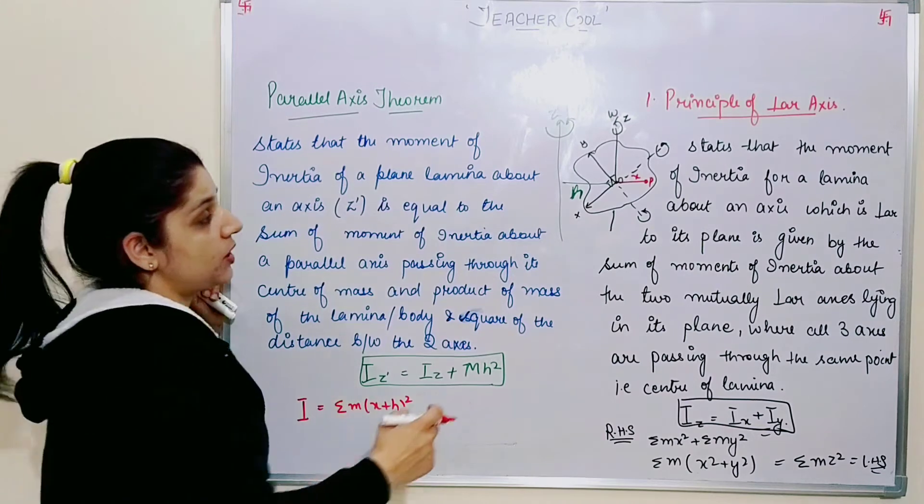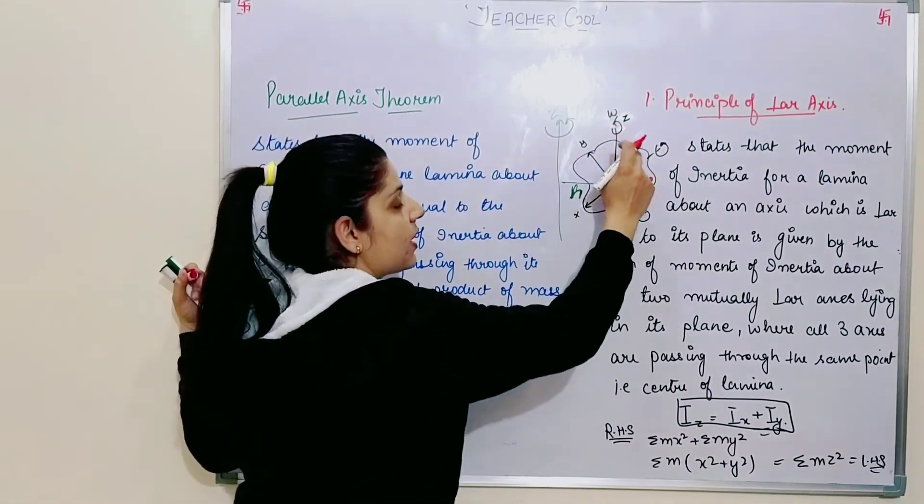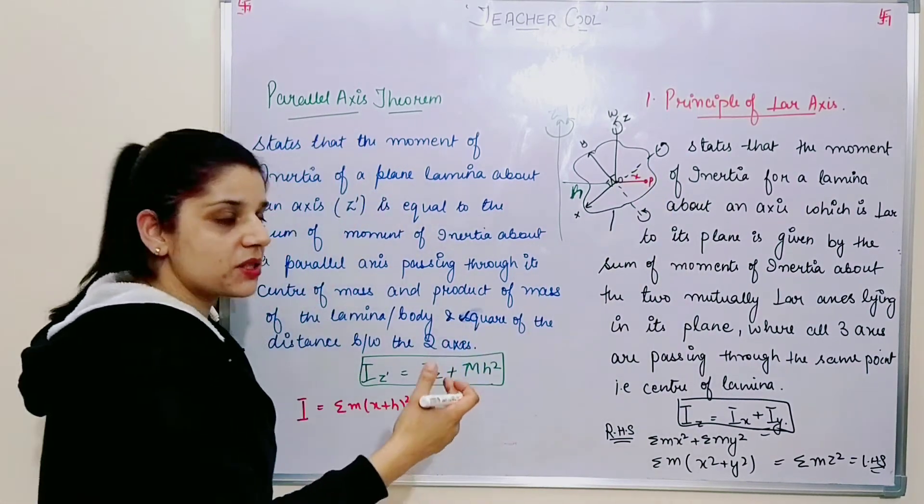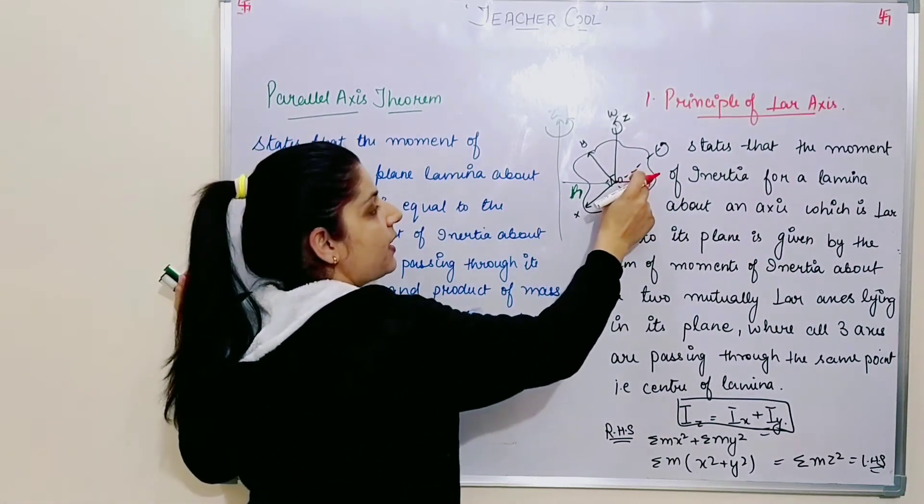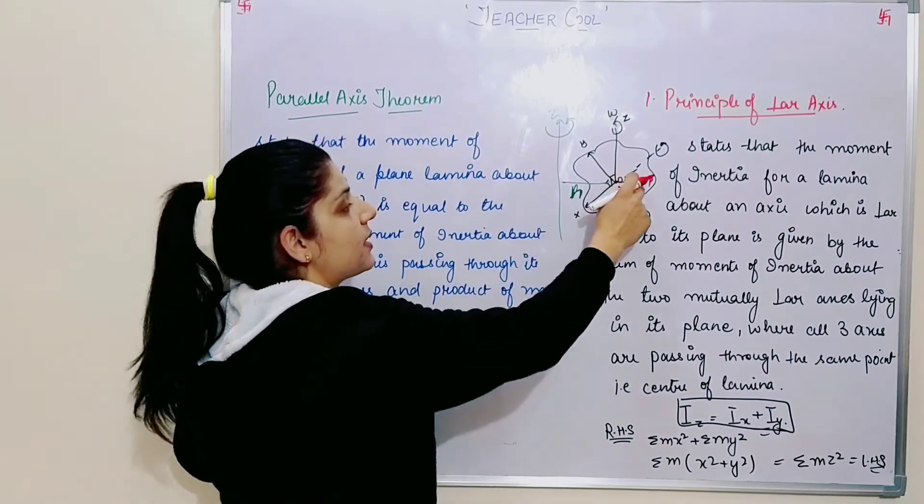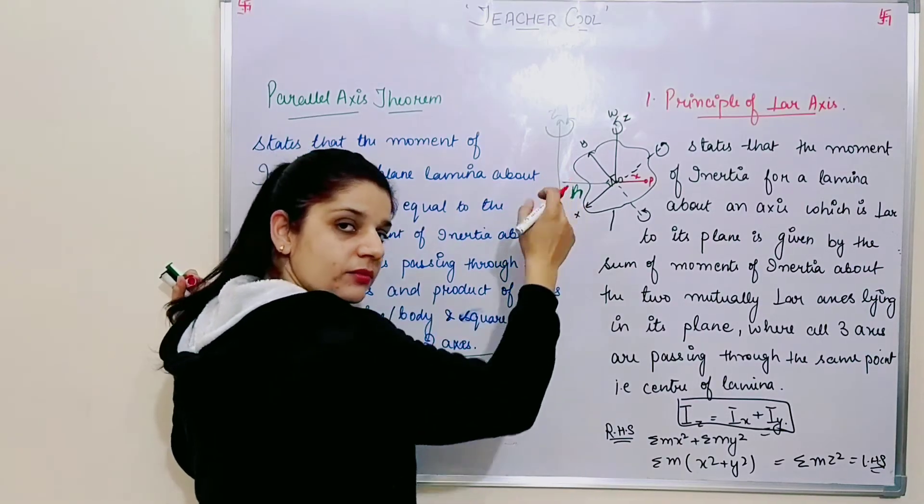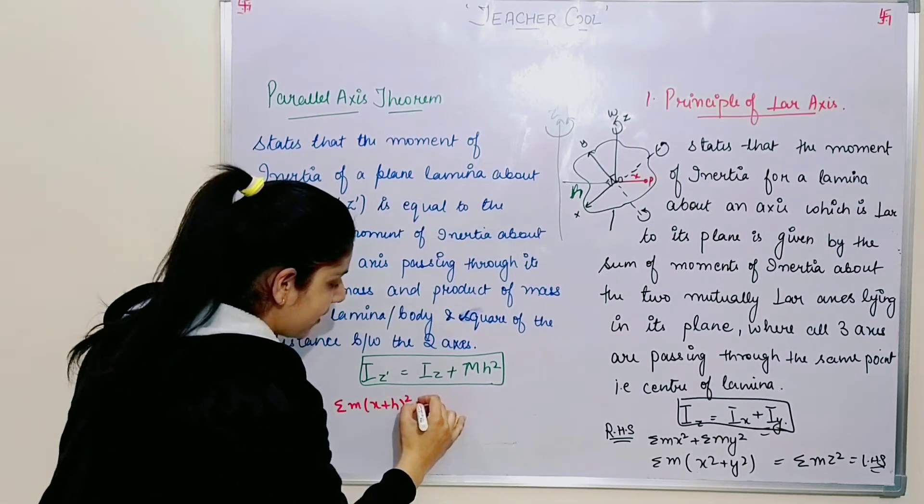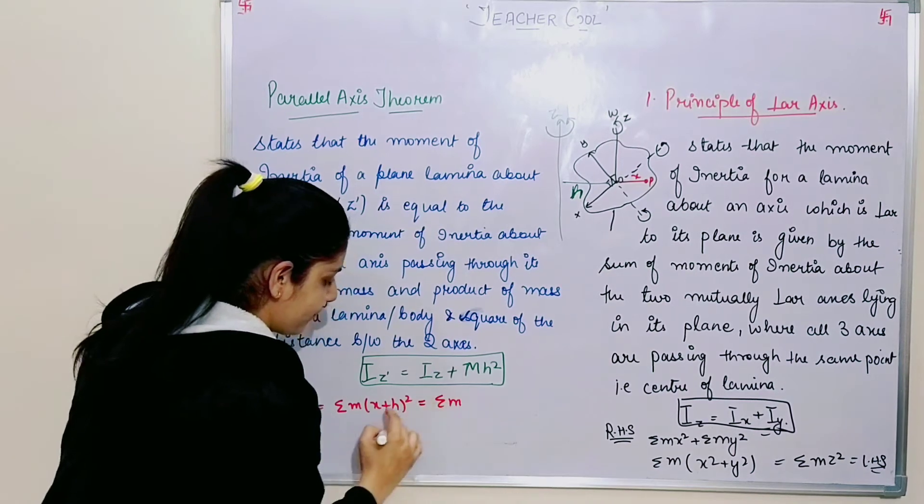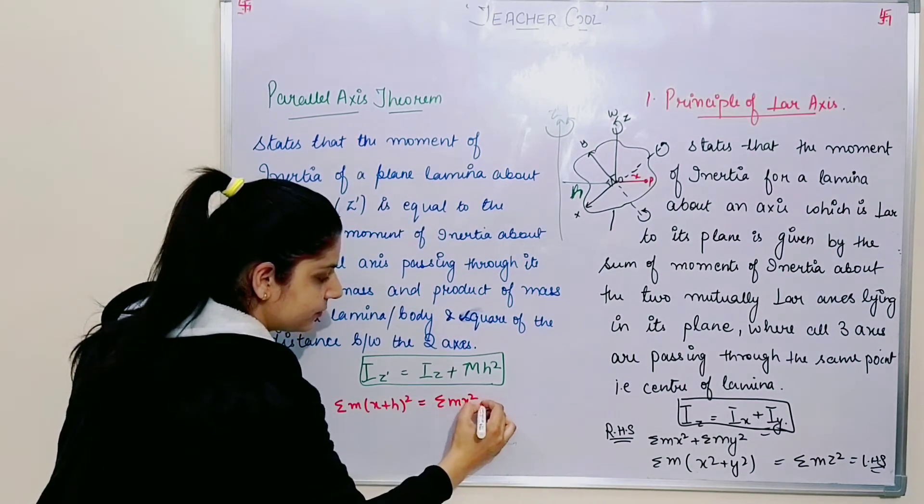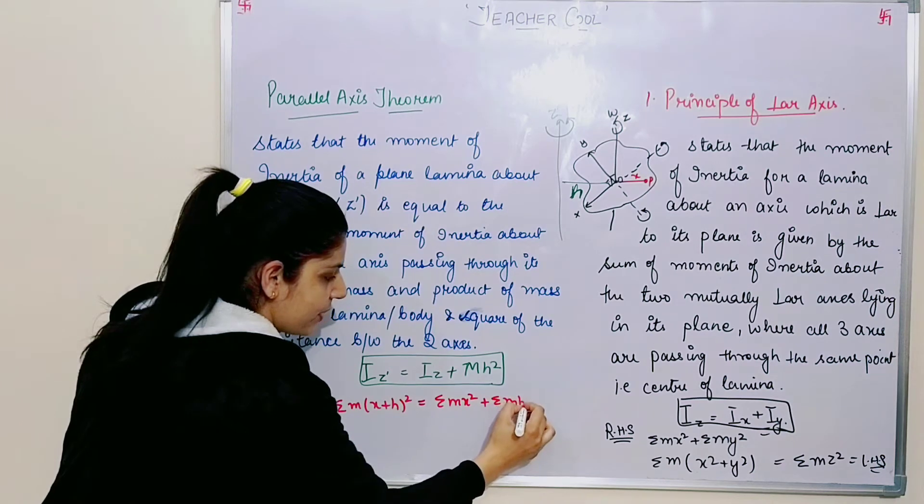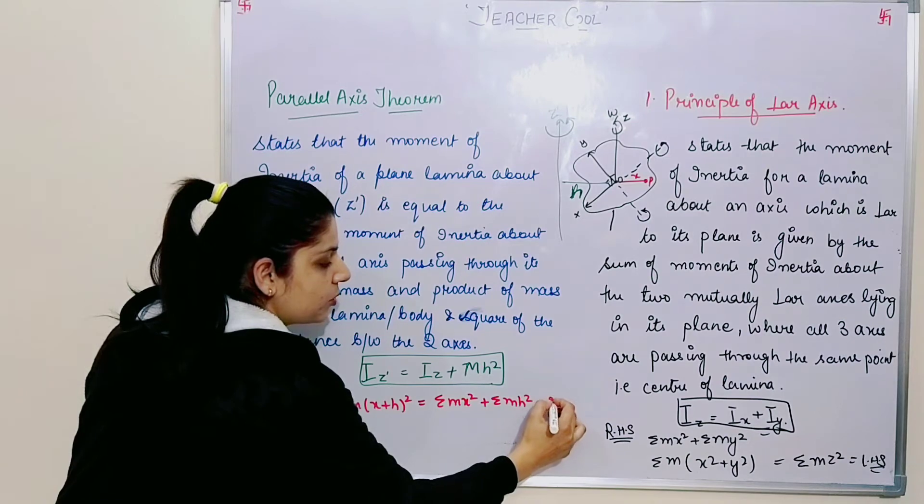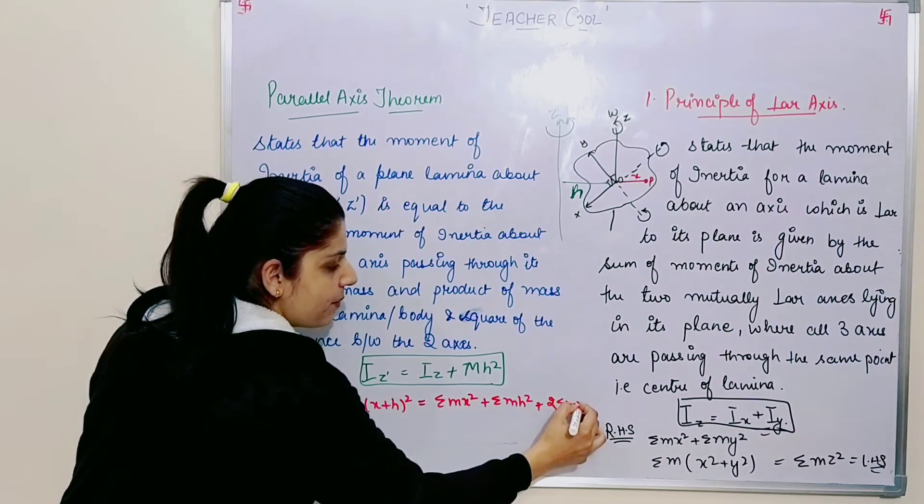Why x plus h whole square? Because the mass of this whole lamina will come on P. So rotation is along this axis, that's why we take the whole distance. If I expand this, I will get summation m x square, plus summation m h square, plus two times summation m x h.